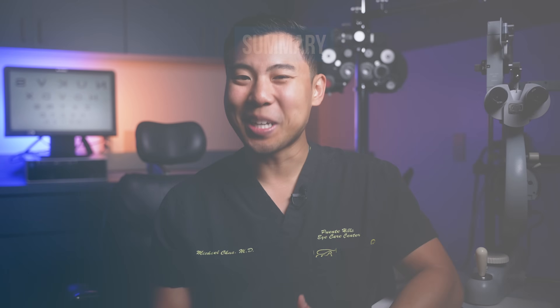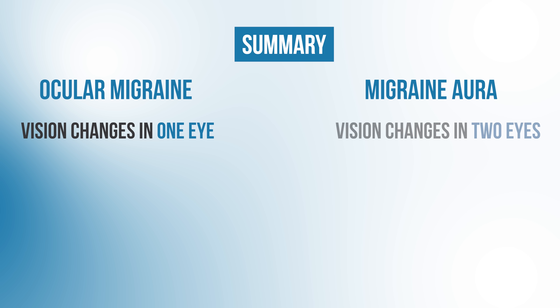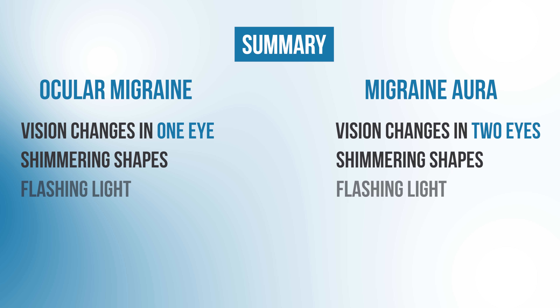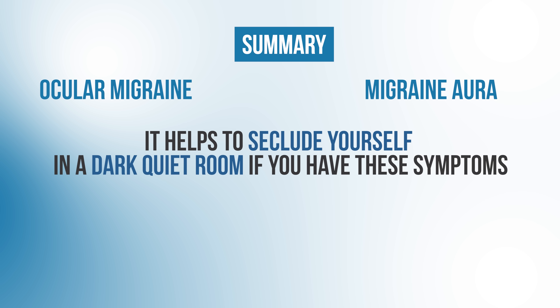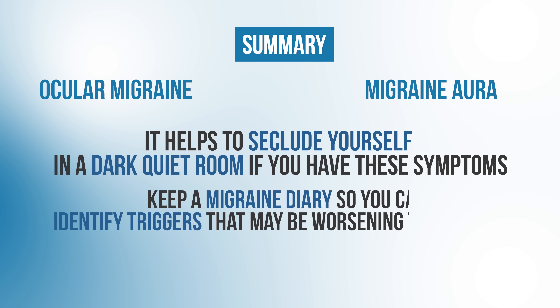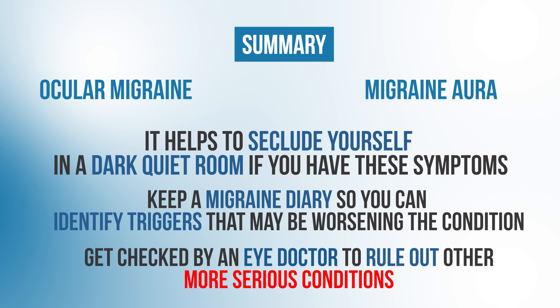I hope this review of ocular migraines and migraine with aura was helpful. To summarize: with ocular or retinal migraines, you'll notice vision changes in one eye, while with migraine auras, you'll see visual changes in both eyes. Common symptoms include shimmering shapes, flashing lights, or black or blurry spots in your vision. It helps to seclude yourself in a dark and quiet room if you have these symptoms. If these problems continue, keep a migraine diary to identify triggers. And to be safe, if you're noticing new visual symptoms, get checked out by an eye doctor to rule out other, more serious conditions.